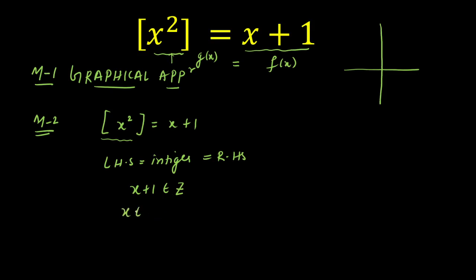If x + 1 is an integer, that means x is an integer. If x is an integer, then x² is also an integer. That means I can open this equation as x² = x + 1, because the greatest integer function of an integer is the integer itself. Let's solve this quadratic and check if we're getting integer solutions or not. If I get integer solutions, they will be accepted; otherwise, all other solutions will be rejected.